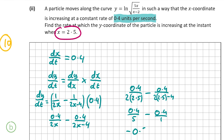So the answer is minus 0.32 units per second. In other words, the y coordinate is decreasing at a rate of 0.32 units per second. That's our answer for B part 2, which is the final part of the question. Thank you very much for watching and I hope I helped.